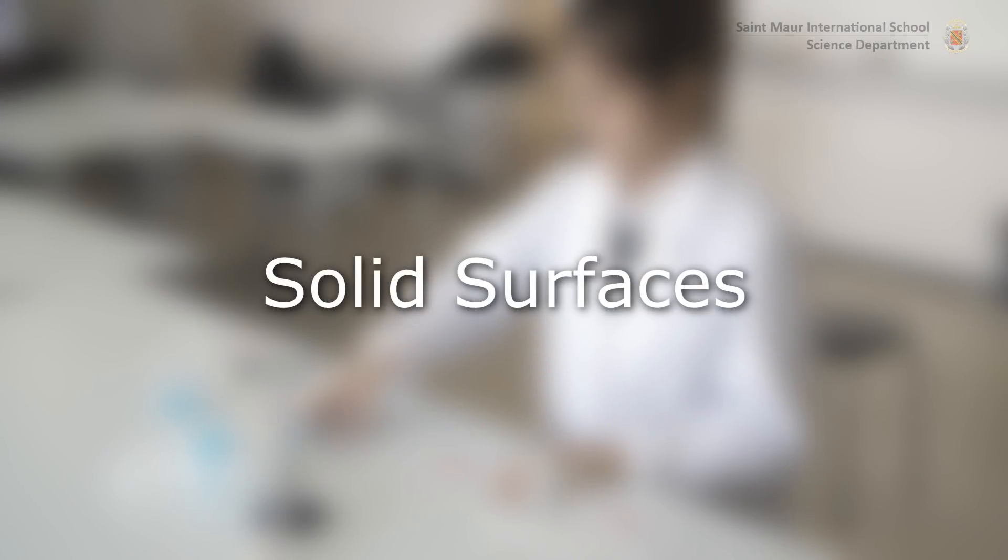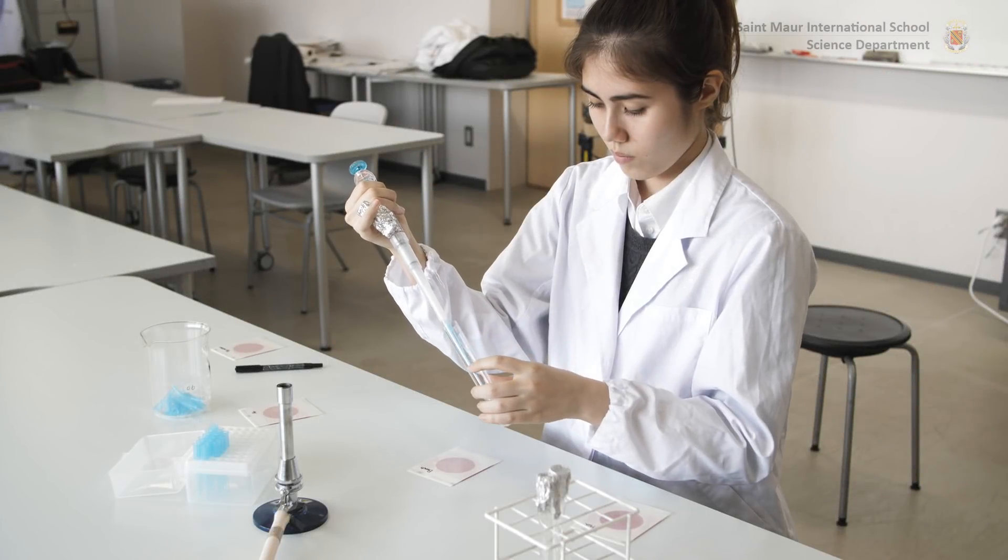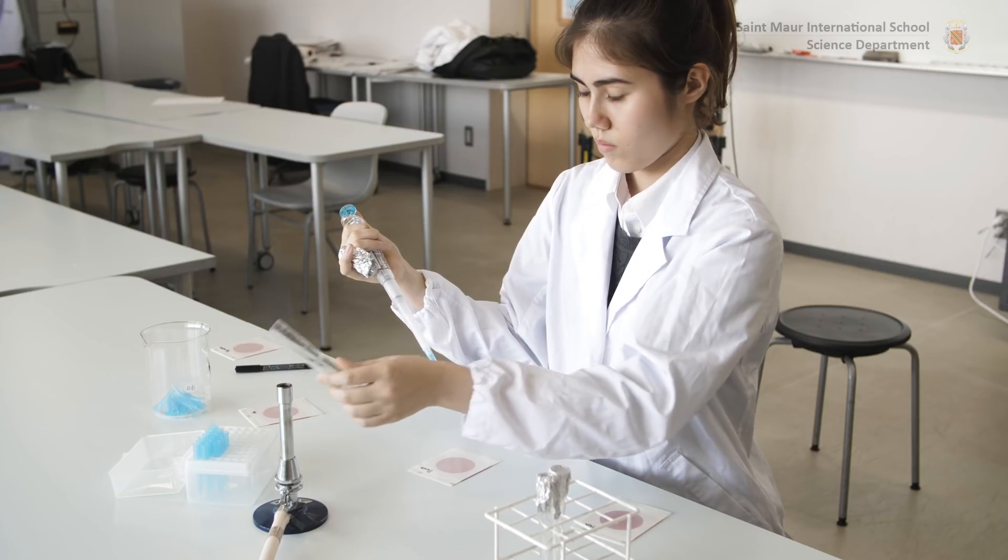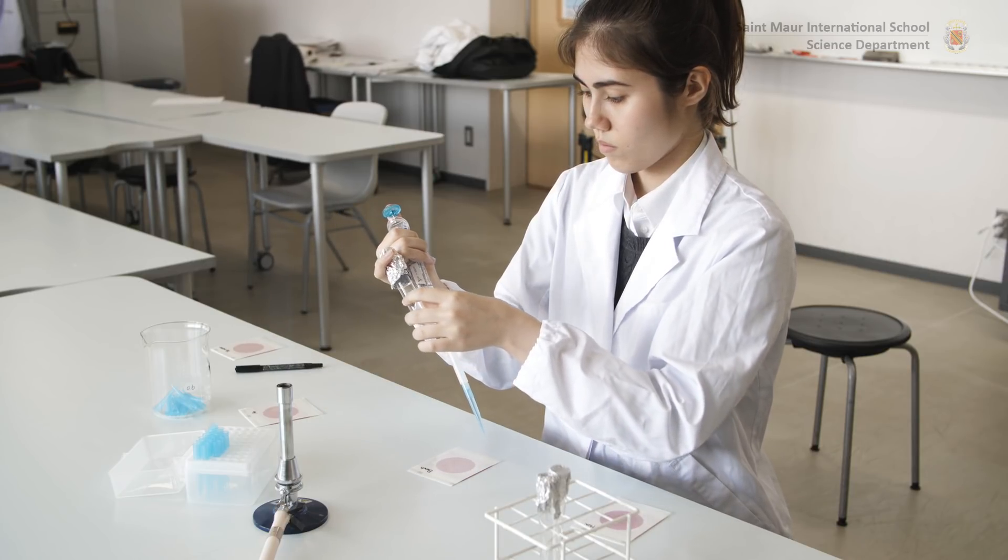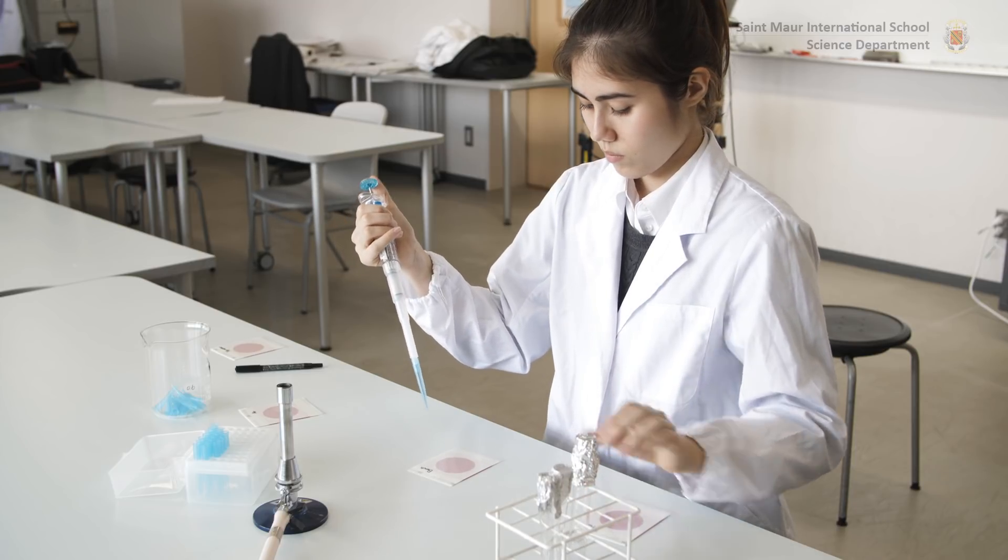Microbial load estimation on solid surfaces: For surface sampling, the Petrifilm must first be jellified by adding 1 milliliter of an 8.5 grams per liter sodium chloride solution that has previously been sterilized by autoclaving.